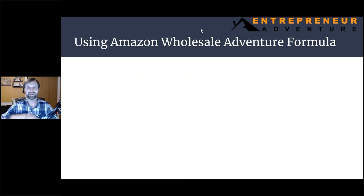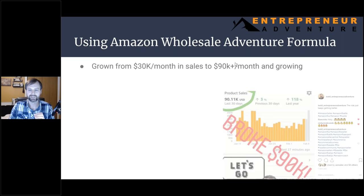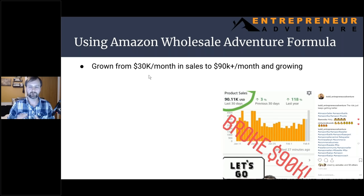Now on to the tactics. Using the Amazon Wholesale Adventure Formula, I've grown from $30,000 a month up to $90,000 a month and growing. When I went full time I was selling $30,000 — a lot of that was retail arbitrage, a little bit of private label and a little bit of wholesale. I've switched to mostly wholesale now using this formula and continue to grow more every day.